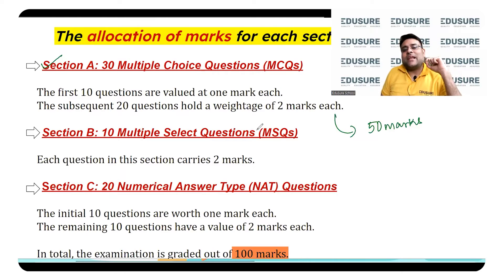Section B has 10 multiple select questions, MSQ. Multiple answers can be correct. So here the answers are normally A, B, A and D, C, B and D, it can be anything. Here each and every question carries two marks, so 20 marks here.